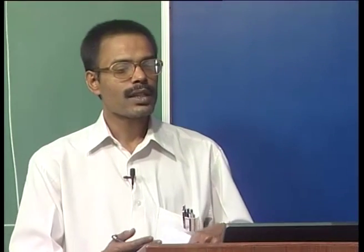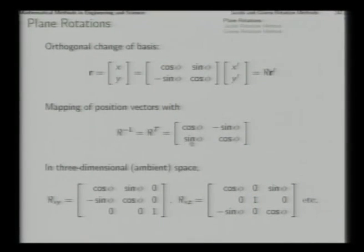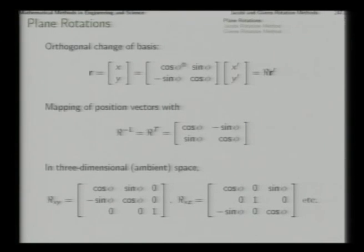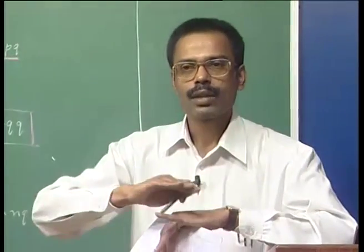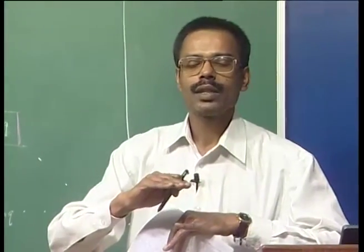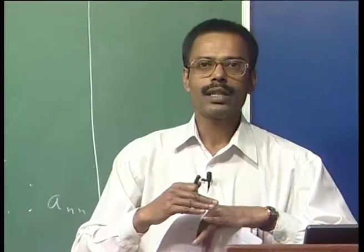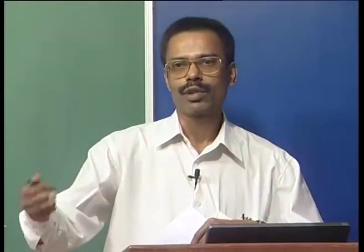In three-dimensional space, this matrix will be augmented with a row and column of 0 0 1 at the bottom and right side. Corresponding to these, this matrix in the x-y plane will have this form in which the third column and third row are the same as identity, meaning that in this rotation in the x-y plane the z coordinate does not change and does not affect x and y at all.